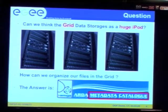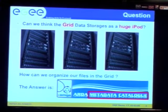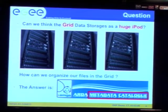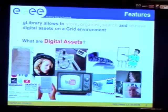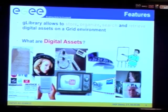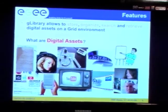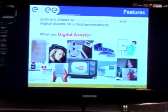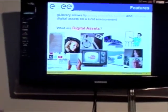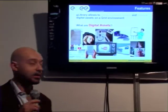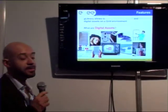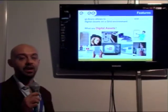We need a way to organize our files on the grid. G Library allows us to store, organize, search, and retrieve digital assets in a grid environment. But what do we mean by digital assets?